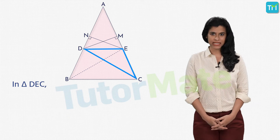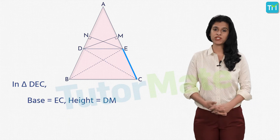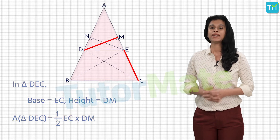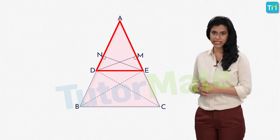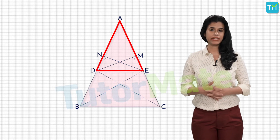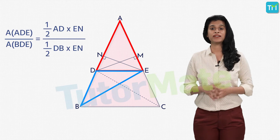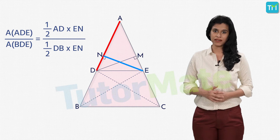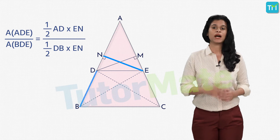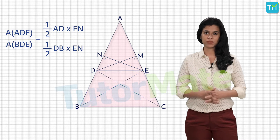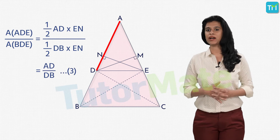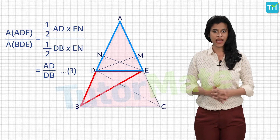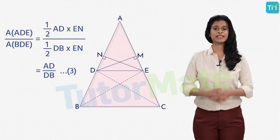For triangle DEC, we consider the base as EC, for which the corresponding height is DM, giving us its area as half times EC times DM. Now, taking the ratio of the area of triangle ADE per Statement 1 to the area of triangle BDE, we get: half times AD times EN upon half times BD times EN. The halves and EN cancel, leaving us with AD upon DB. So the ratio of the areas is AD upon DB. Let's call this Statement 3.